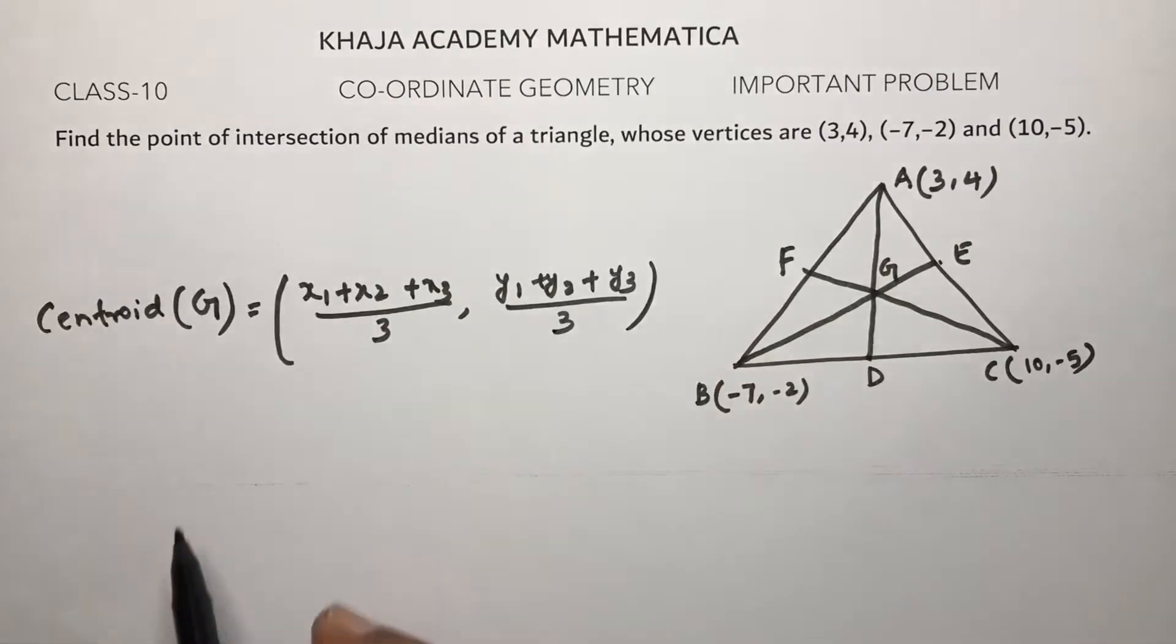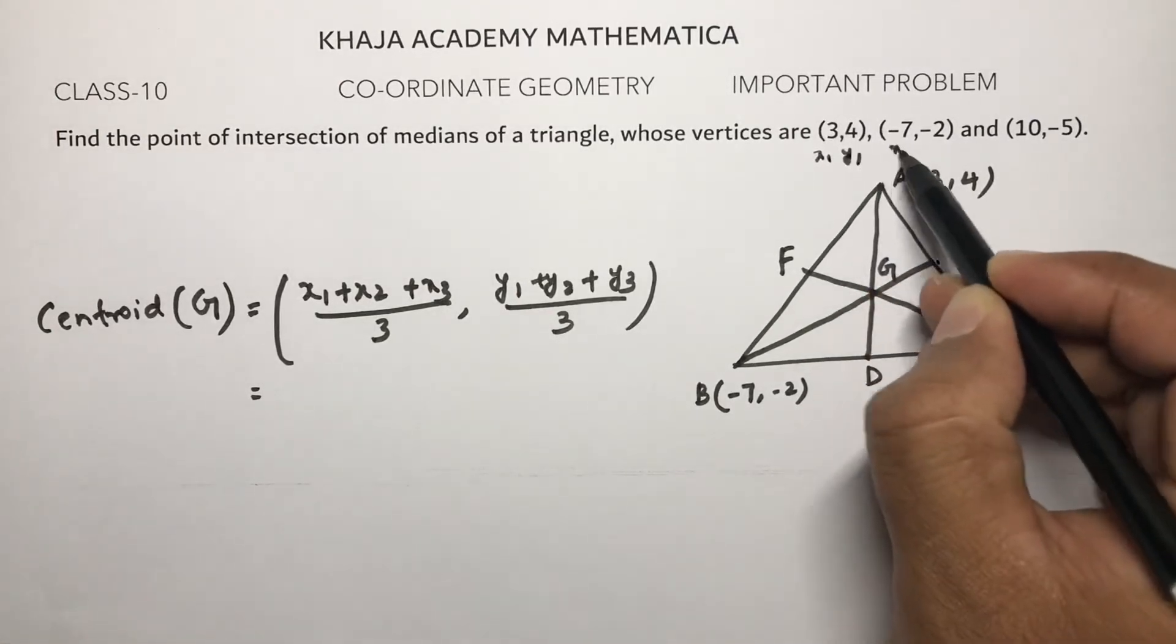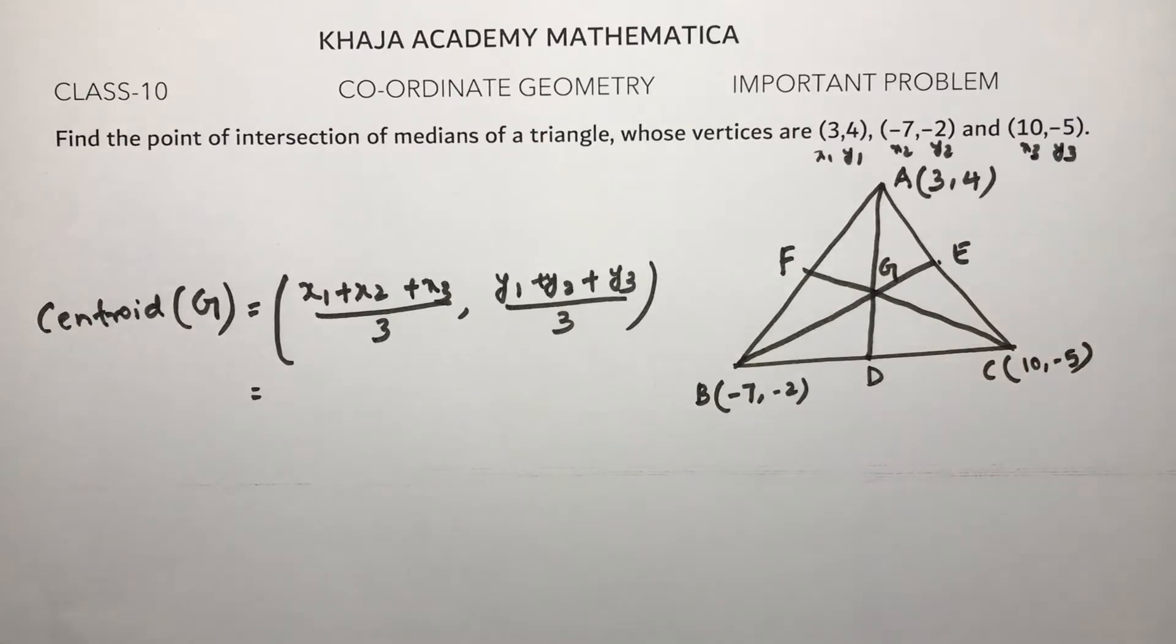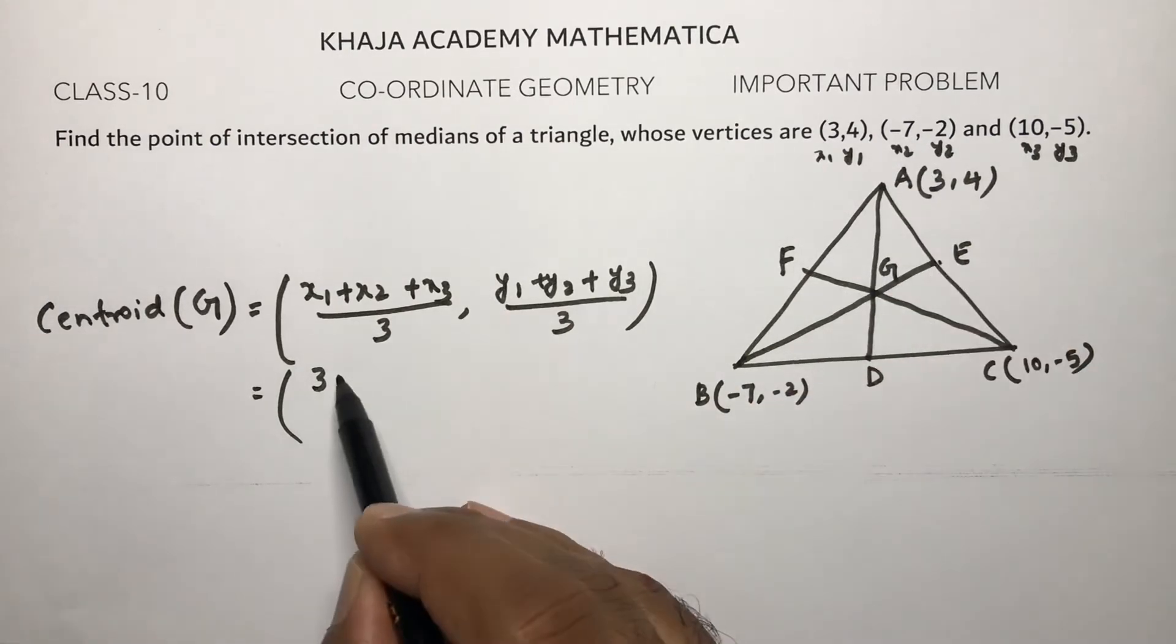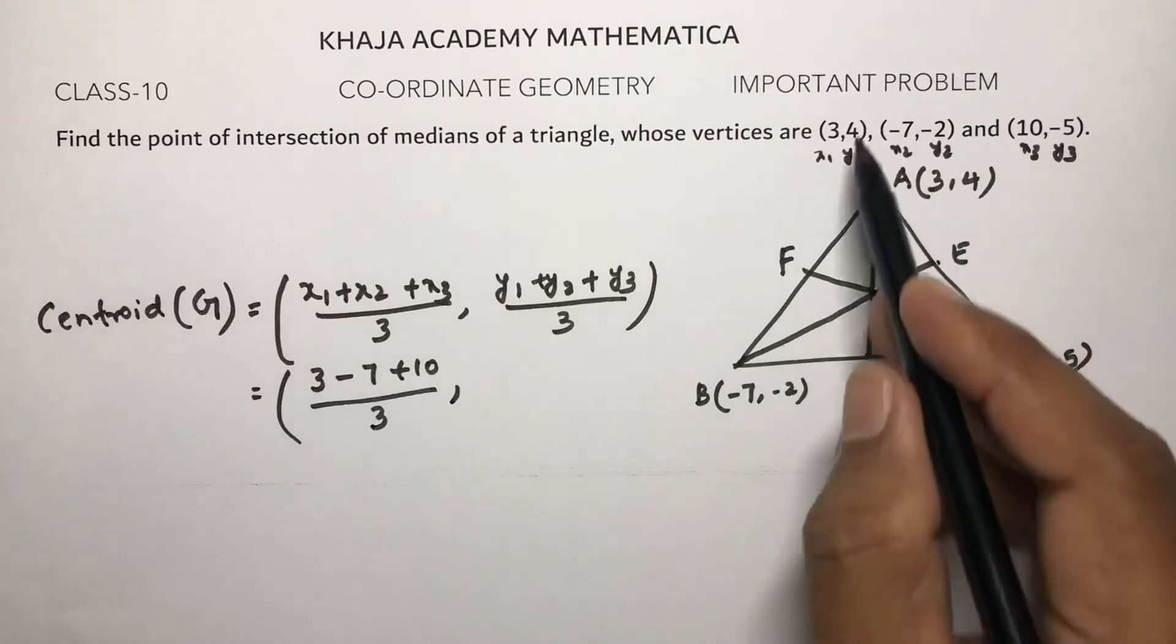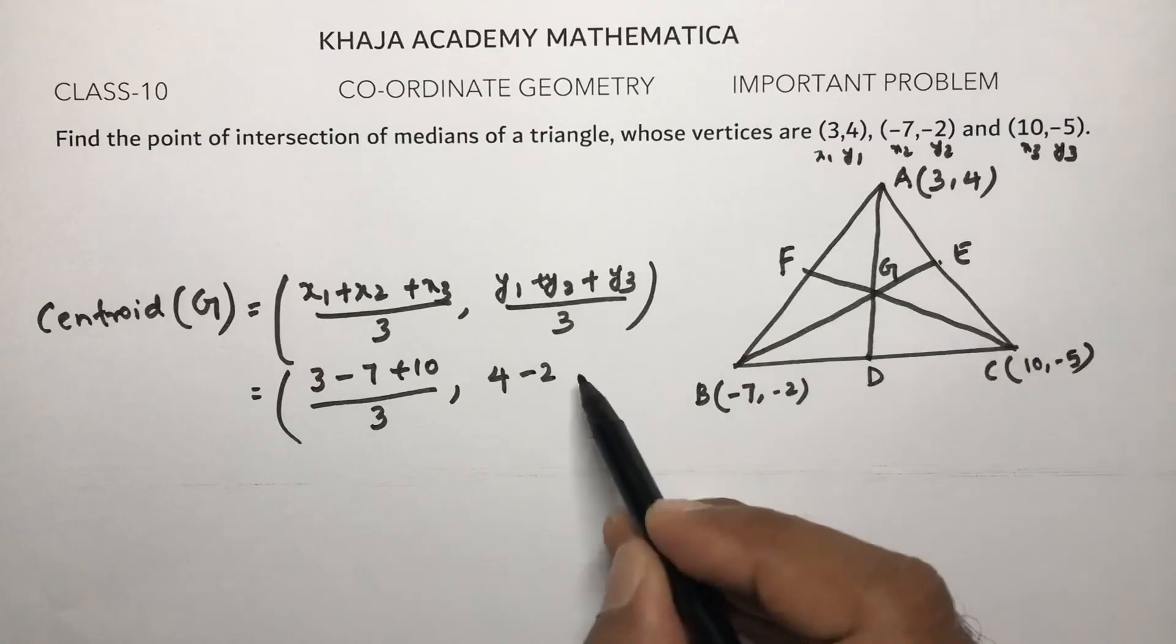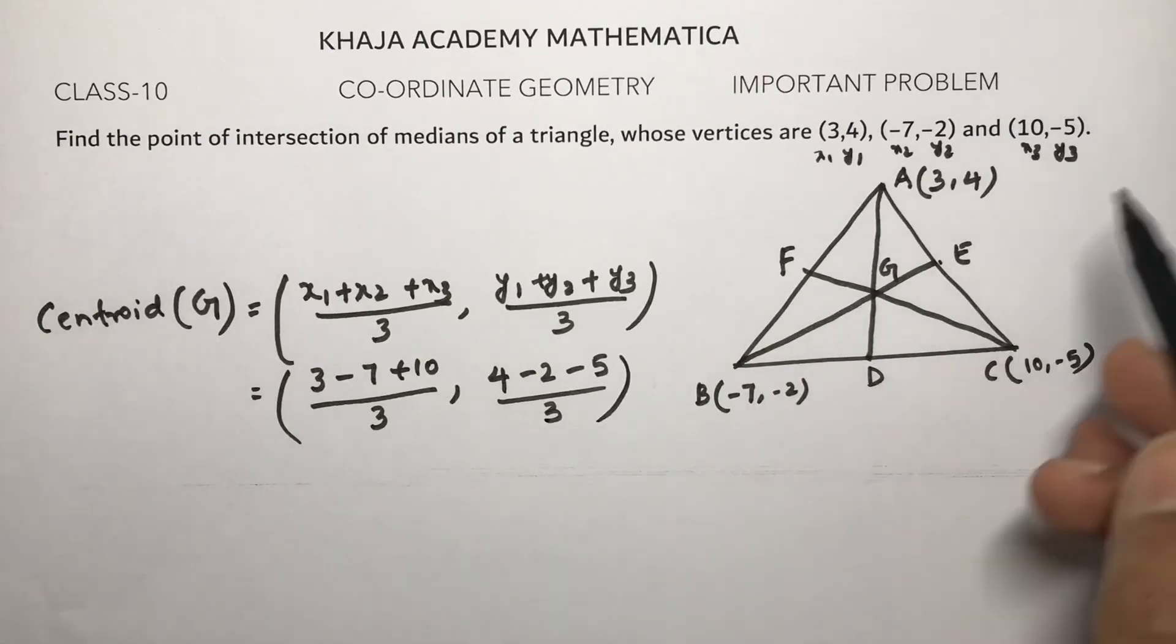So x₁ is 3, plus x₂ is -7, plus x₃ is 10, divided by 3. y₁ is 4, y₂ is -2, plus y₃ is -5, divided by 3. Now here, 10 plus 3 is 13, and 13 minus 7 is 6.